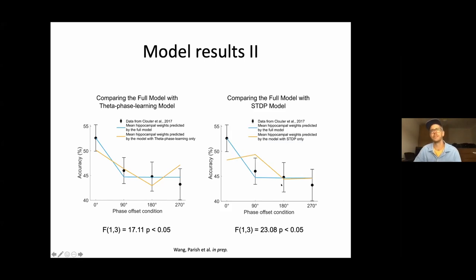And here we did the opposite. So here we looked at what the model would predict if we kick out theta phase dependent learning. And there you see again that the model does a worse fit compared to the full model. Because here now we get very high learning performance for the 90 degree phase condition. And of course that happens because for the 90 degree phase condition, you have the visual neurons spiking in a short time window after the auditory neuron spikes. So you get a very strong LTP for 90 degree condition.